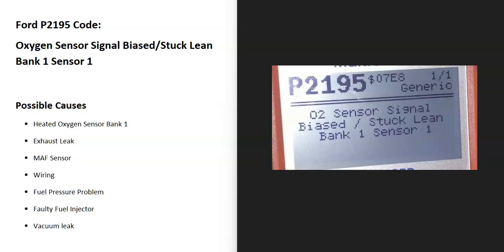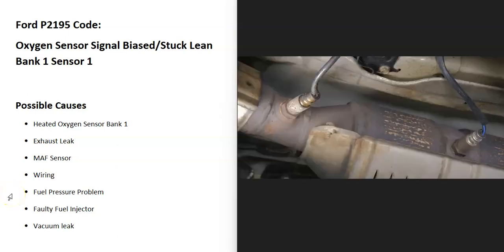There's sensors located on the exhaust and they're reporting back to the onboard computer how much oxygen was burnt off during combustion. This bank one sensor one sensor is reporting back to the onboard computer that the air fuel ratio mixture is off, that there's too much air going into the engine and not enough gas.